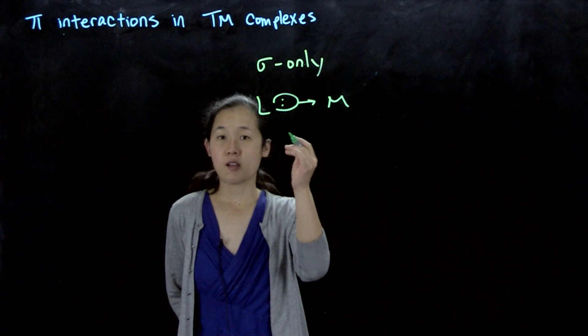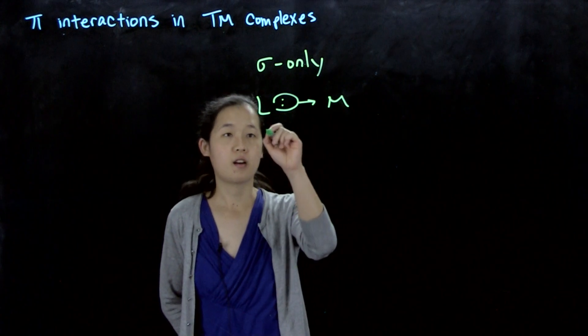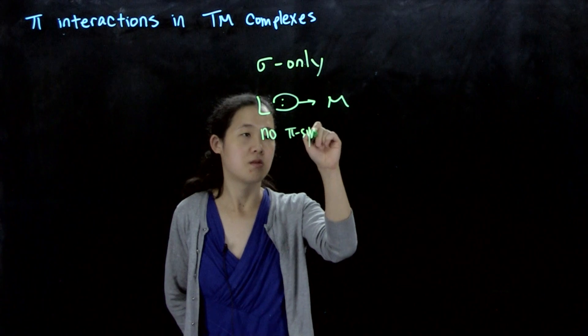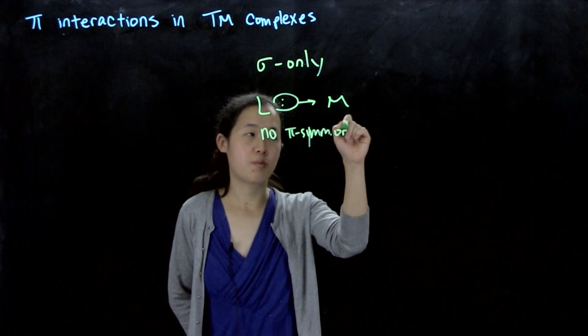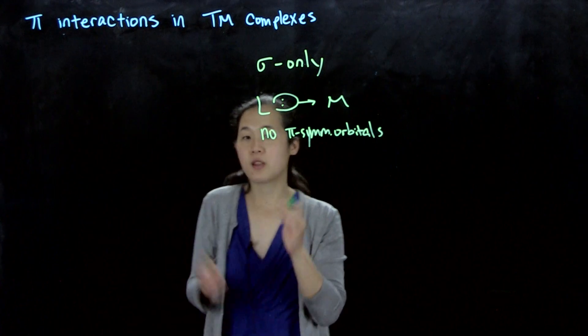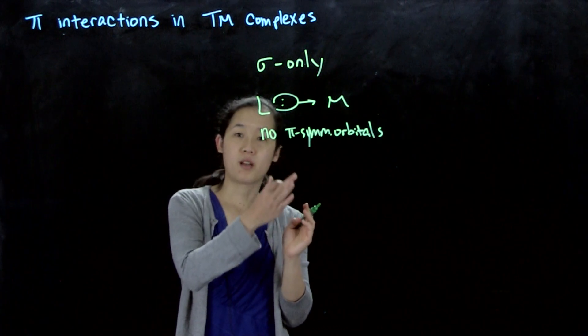Ligands that can only do sigma bonding are when you have no pi-symmetry orbitals, whether they're filled or unfilled. Or if you have them that they're not of the appropriate energy to interact with the orbitals on the metal.